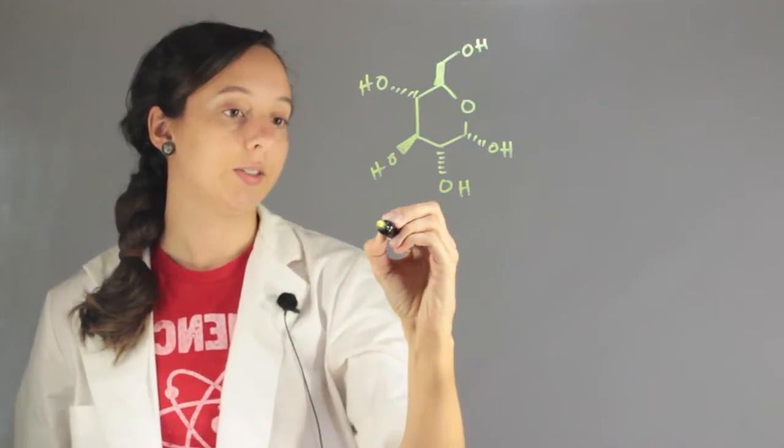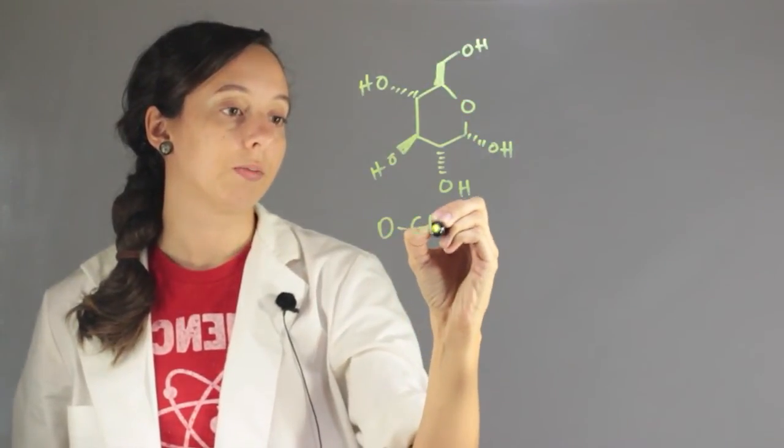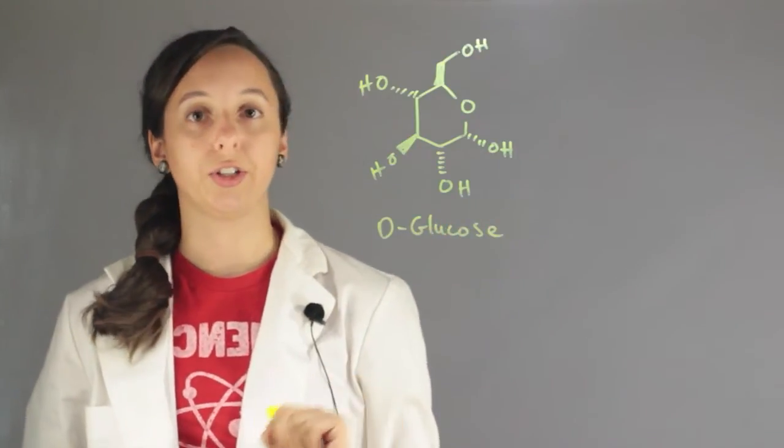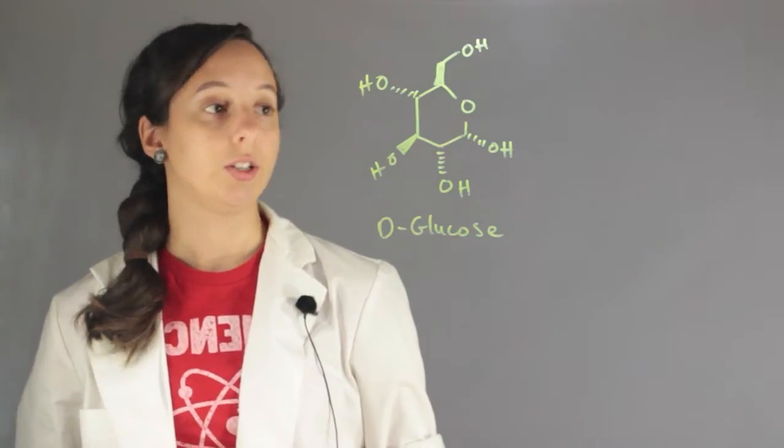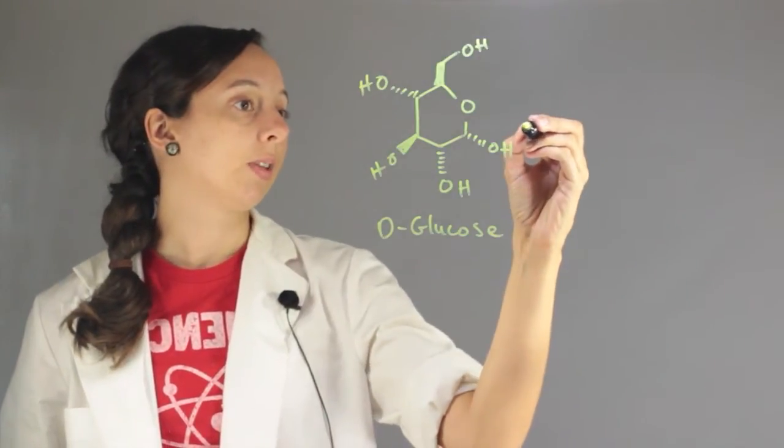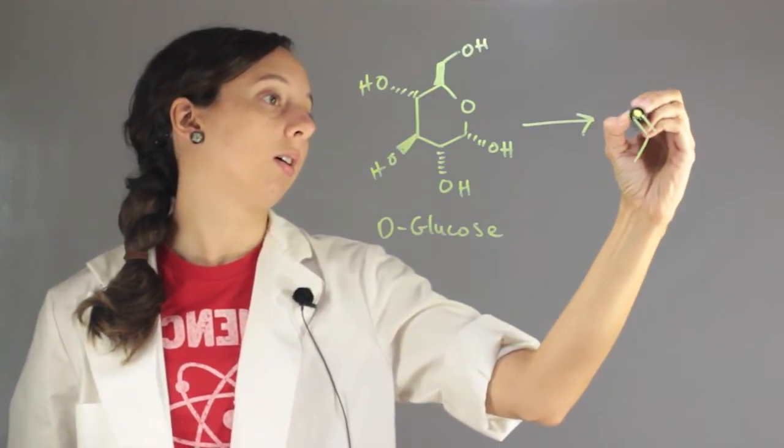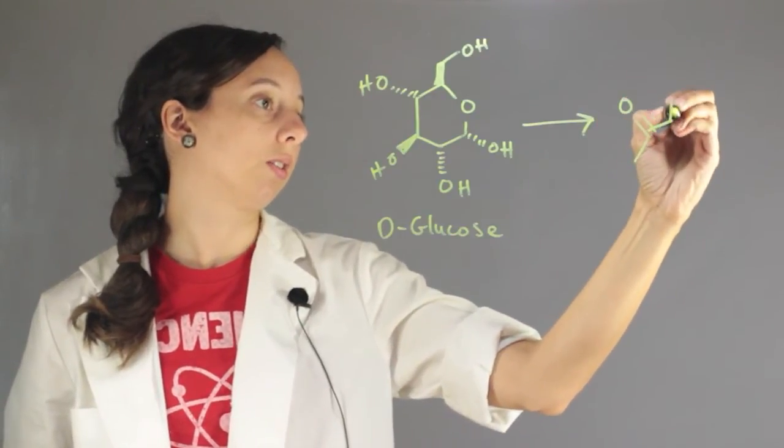So this is D-glucose and during glycolysis you're taking your sugars and you're breaking them down to something called pyruvate. And pyruvate is a chemical with a structure that looks like this.